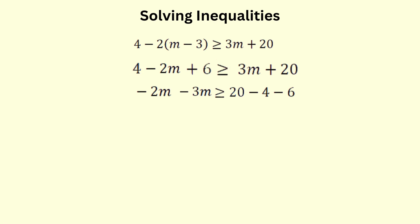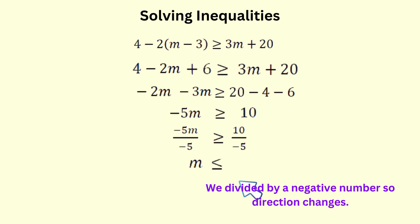Now, to calculate minus 2m minus 3m, we add and keep the sign to get minus 5m. On the right, we get 10. We need to isolate the m, so we divide both sides by negative 5 to get rid of the negative 5 that's multiplied to the m. So we have m now isolated on the left. We need to change the direction of the inequality symbol because we divided both sides by a negative number. On the right, we have 10 divided by negative 5, which is negative 2. Our solution is therefore m is less than or equal to negative 2.